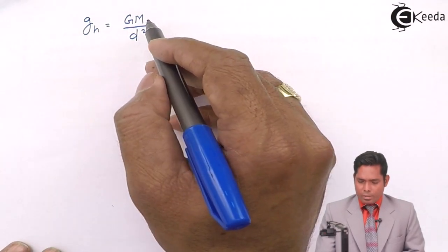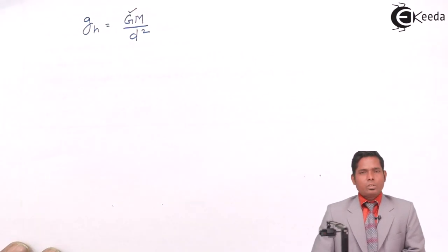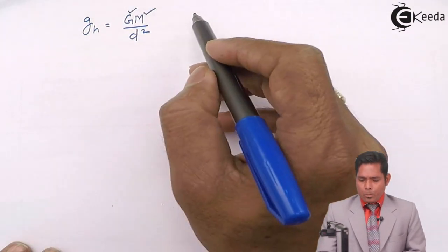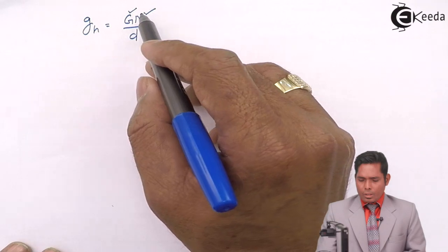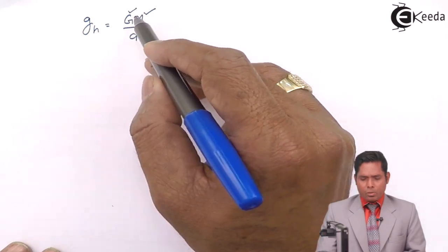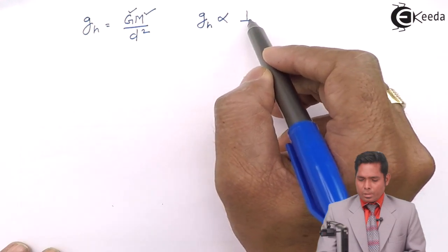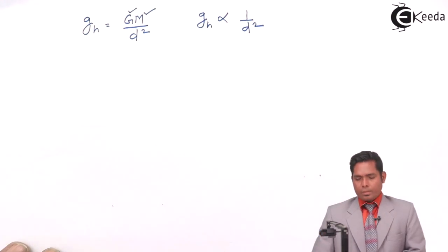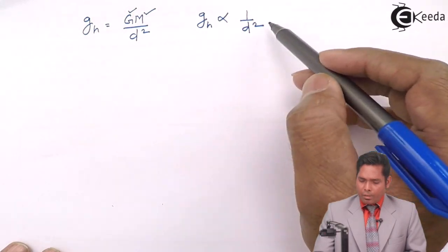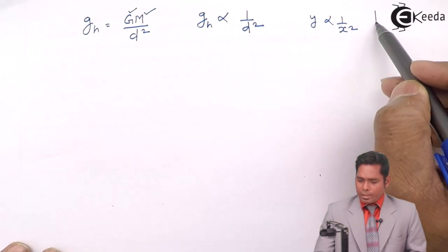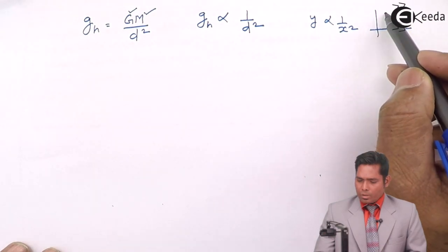If you look at this, G and M are constants, so g is mostly proportional to 1/d². This is how the graph goes — it follows a 1/d² relationship.